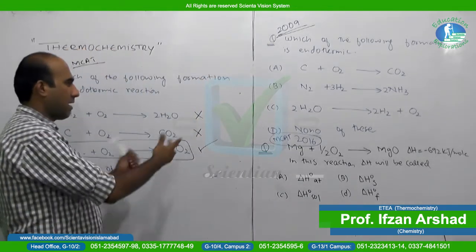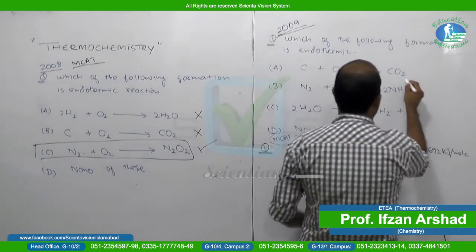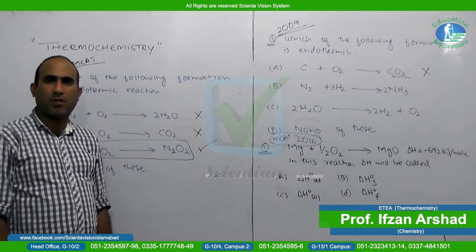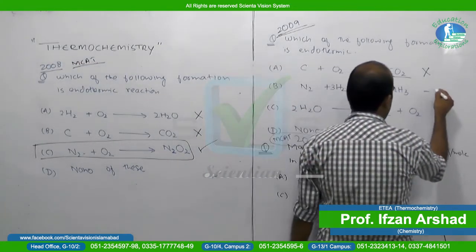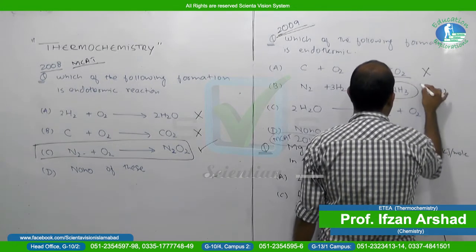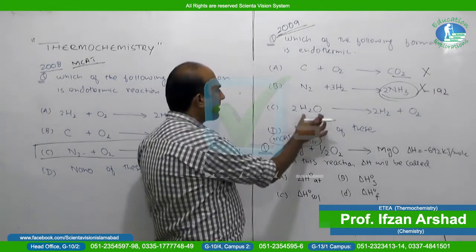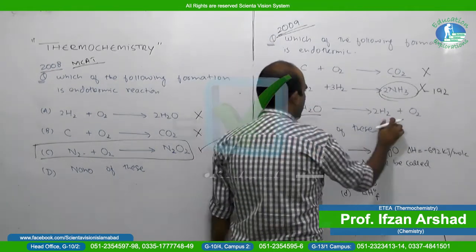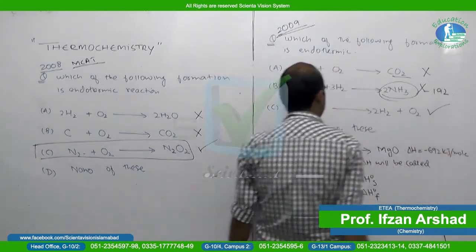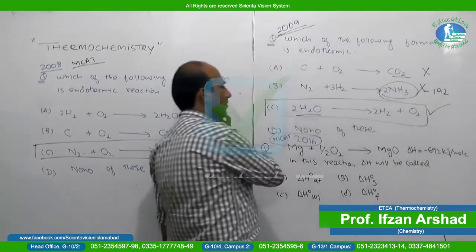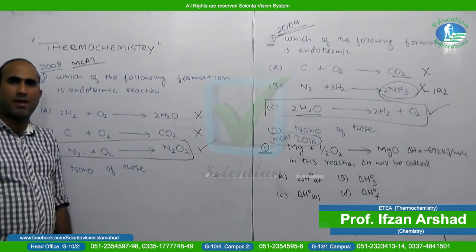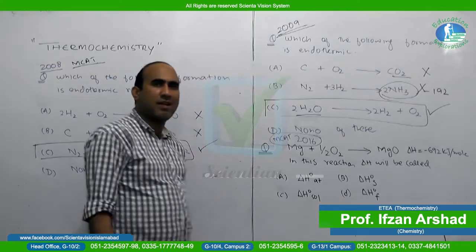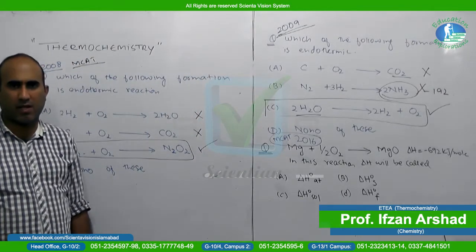A 2009 medical MCQ asks: which of the following formation reactions is endothermic? C + O2 → CO2 is exothermic. Ammonia formation (used in the Haber process) has delta H = -192 kJ/mol, so it is exothermic. H2O → H2 + O2 — since combustion of hydrogen with oxygen is exothermic, the reverse (decomposition of water) is endothermic. So the answer is option C.